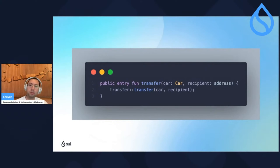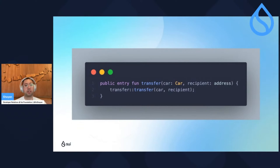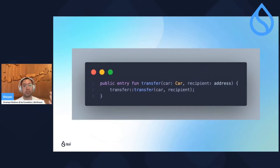How can we transfer the car to others? Can we simply call transfer::transfer ourselves? No. If you look into the SWE standard library, transfer::transfer is a public function, not a public entry function, meaning you cannot call it directly. So instead you create a transfer function wrapper around it which is an entry function, and now you'll be able to transfer the car to another address.